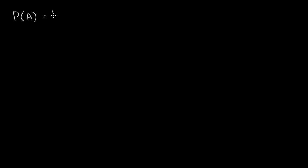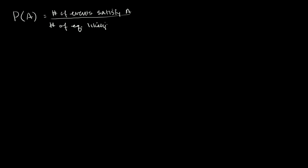So far, we've been dealing with one way of thinking about probability: the probability of A occurring is the number of events that satisfy A over all of the equally likely events. In the case of a fair coin, the probability of heads — there are two equally likely events, and one of them satisfies being heads — so there's a one-half chance of getting heads. Same thing for tails.